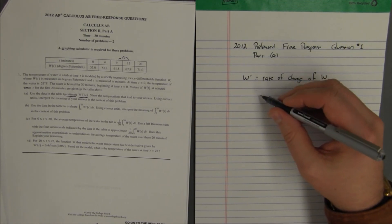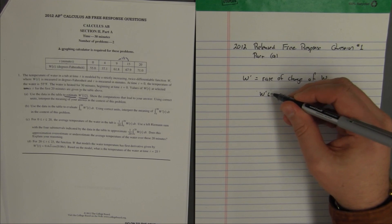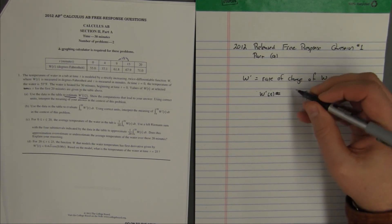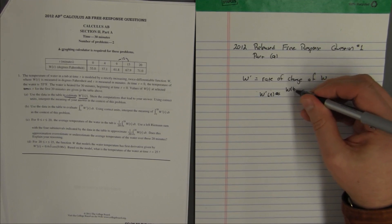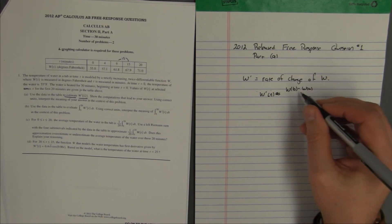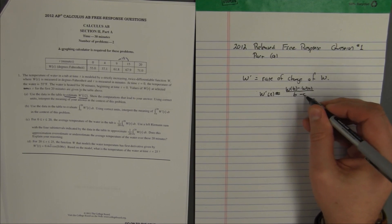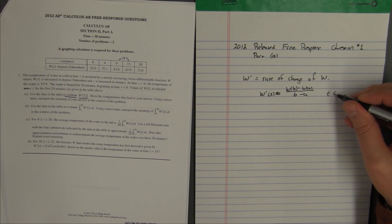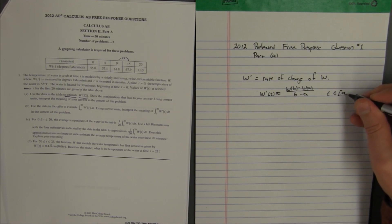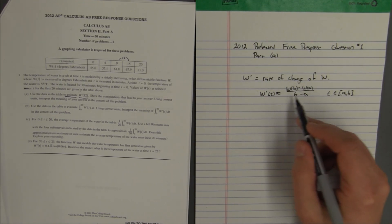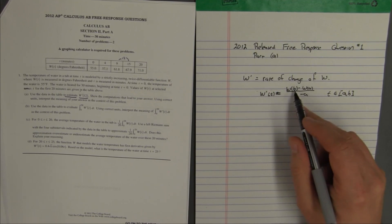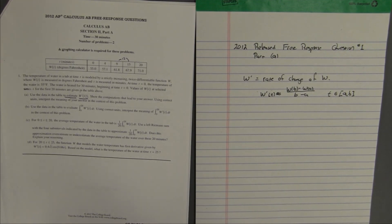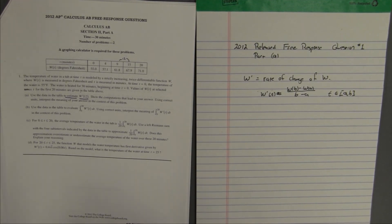And we can estimate rates of change as an average rate of change. So, one type of estimate that we can use is that w prime at a certain time t is approximately equal to w of b minus w of a over b minus a, where t is some point in between a and b. So this is an approximation. We can approximate w prime using this, really the slope formula.